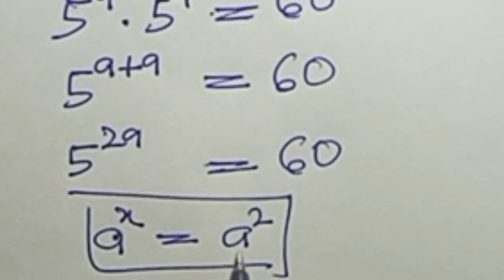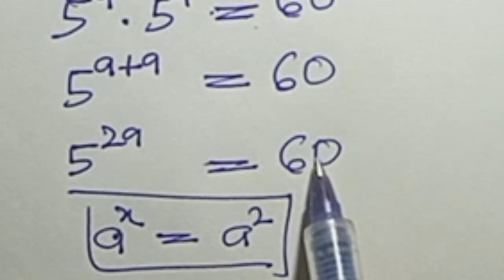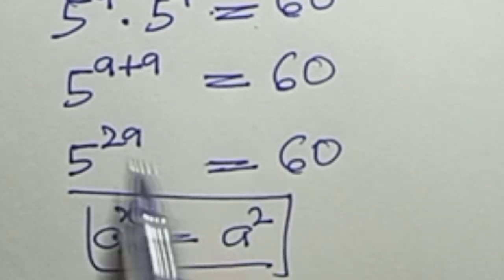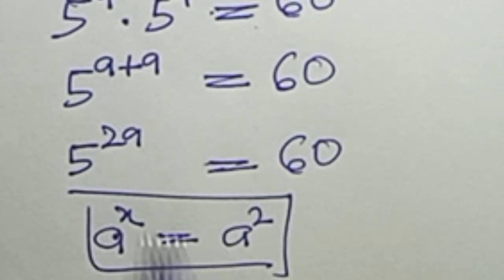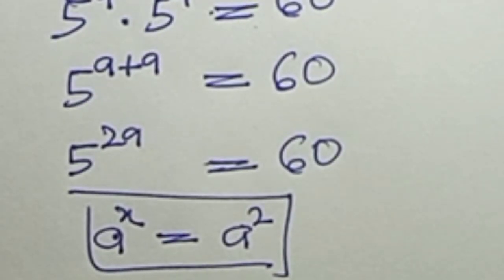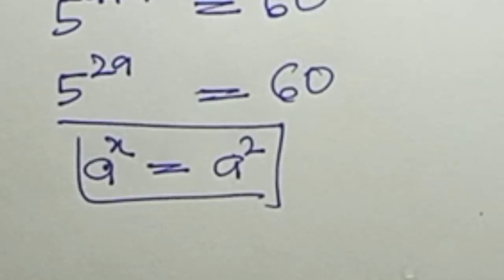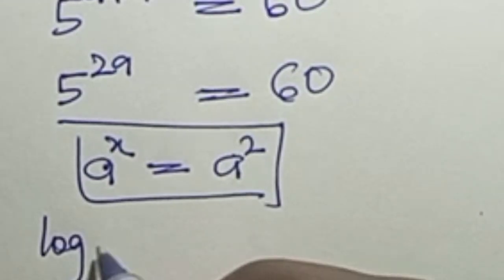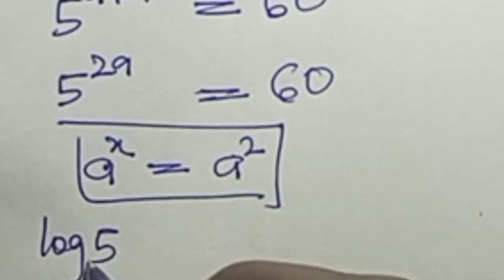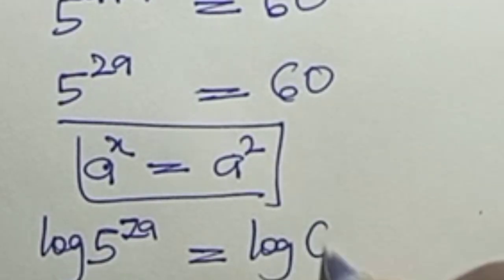However, we cannot write 60 in index form with a base of 5, so we cannot equate powers directly. Because of that, we are going to take the log of both sides: log of 5 raised to power 2a equals log 60.